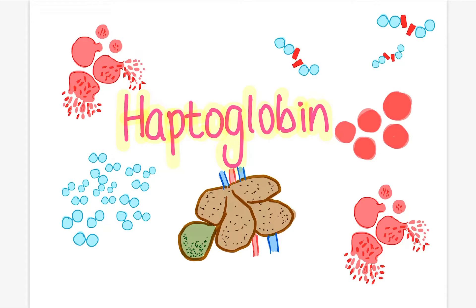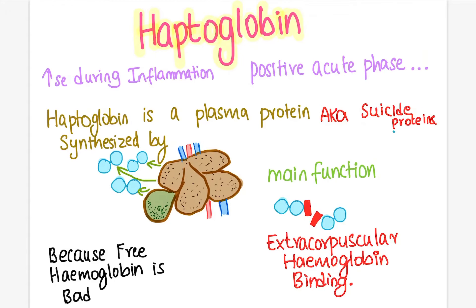Hello everyone, welcome back to my channel. Today let's learn something about haptoglobin. Haptoglobin is a positive acute phase plasma protein and it is usually seen in high concentration during inflammation. Haptoglobin is synthesized by the liver and it is always present in the circulation. They are also called suicidal proteins.